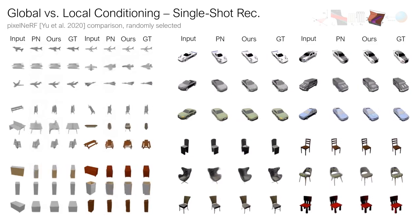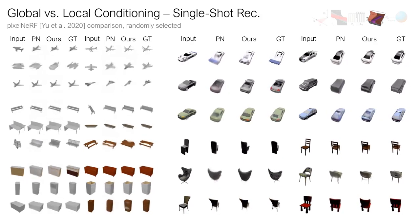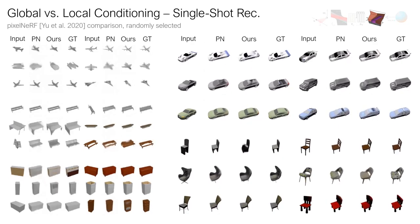While PixelNRF is better at reconstructing out-of-distribution objects, LFN reconstructions are often less blurry.